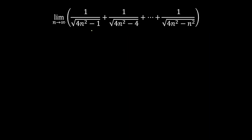This question is from a famous topic: definite integration as a sum of limit. The first step is we are going to write the limit as n tends to infinity in a simplified summation form. We have to generalize the r-th term. The first, second, and n-th terms are given, so let's generalize the r-th term.